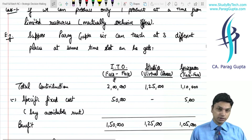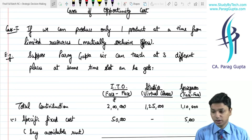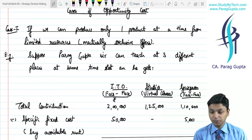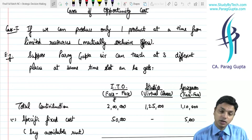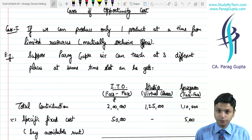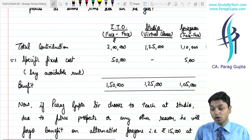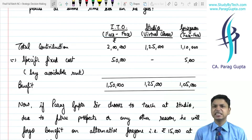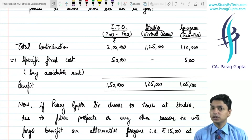I took examples of opportunity cost. In the first case, I said I teach at three different places: first was ITO, second was Studio, third was Gurugram. I can teach at three places but in the same morning time slot, I can only choose one. Now I am getting confused about which option to choose. Obviously I will choose the option that is reaping the highest benefit. You will say obviously go for ITO. But what if I see distant benefit rather than instant benefit?